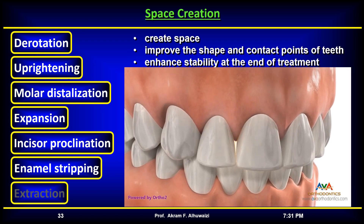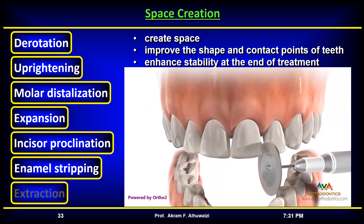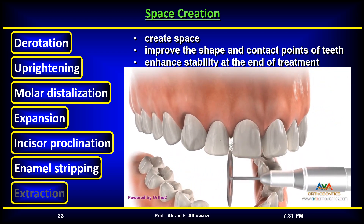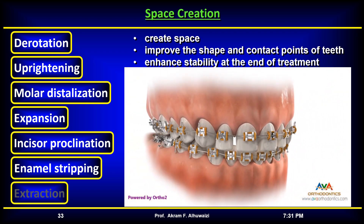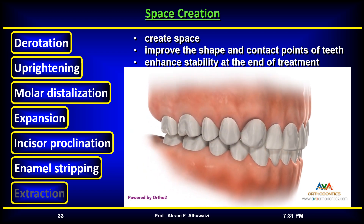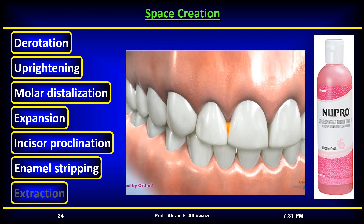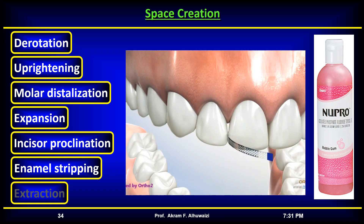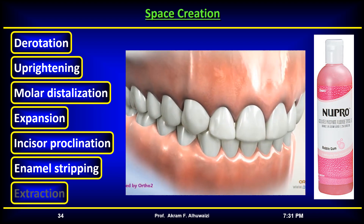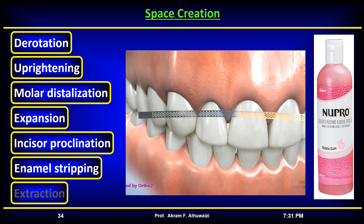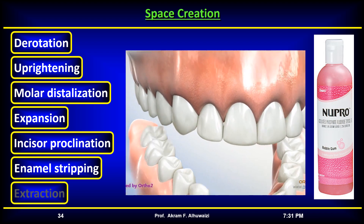Enamel interproximal reduction, or stripping, is the removal of small amounts of enamel on the mesial and distal aspects of the teeth. In addition to creating space, the process can improve the shape of the teeth and contact points, and possibly enhance stability at the end of treatment. On the anterior teeth, approximately half a millimeter can be removed per tooth — a quarter of a millimeter on the mesial and a quarter on the distal — without compromising the health of the teeth. Enamel can be carefully removed with an abrasive strip and then treated topically with fluoride.